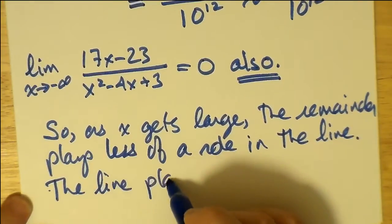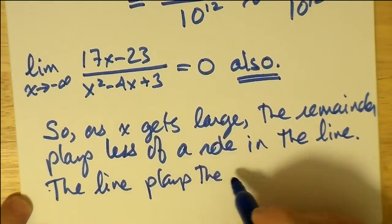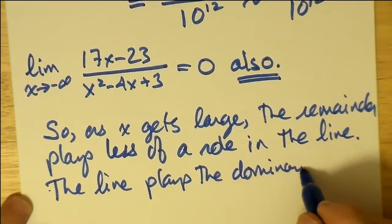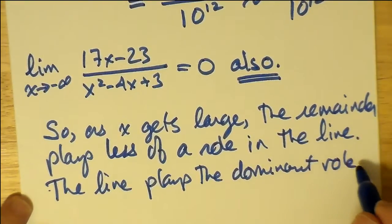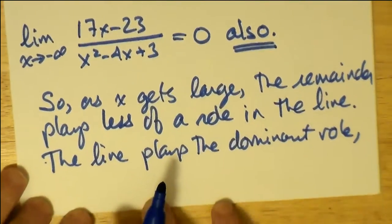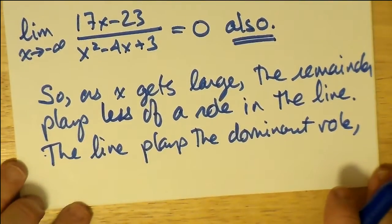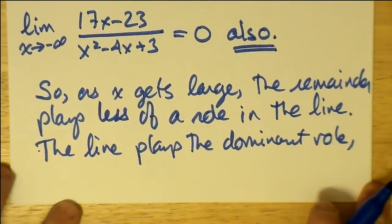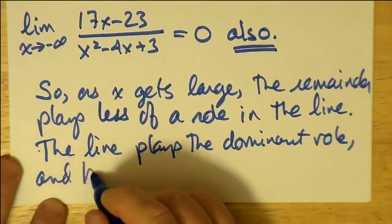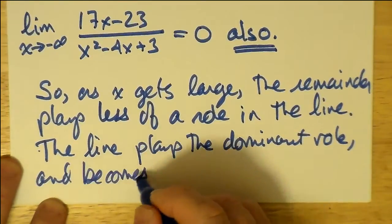So, as x gets large, the remainder plays less of a role in the linear asymptote, or sorry, the oblique asymptote. The oblique asymptote, or the line part of the oblique asymptote, it plays a dominant role, and actually can be considered to be the asymptote itself.